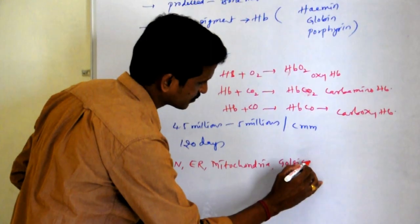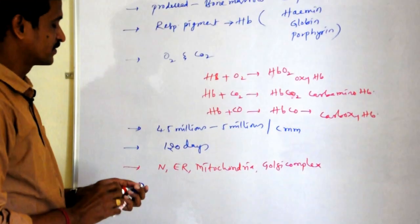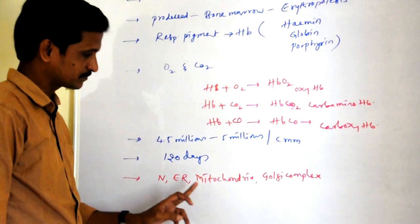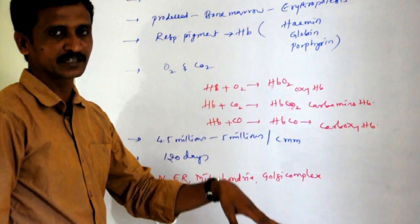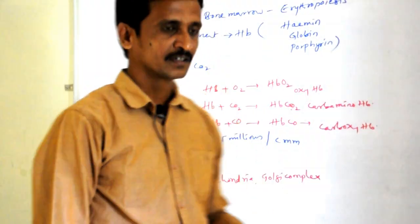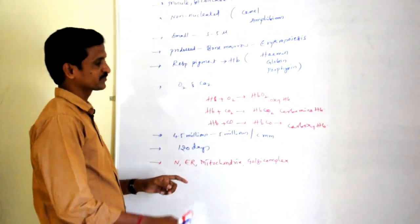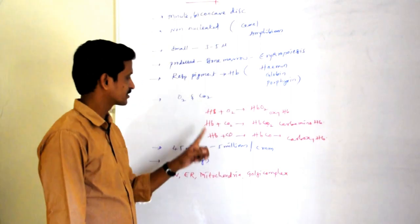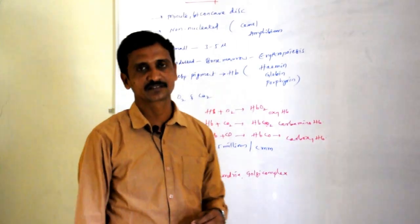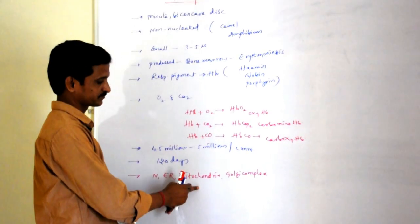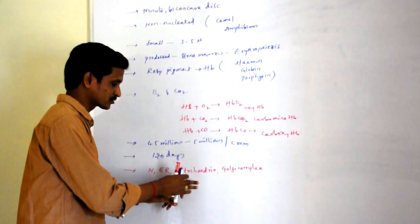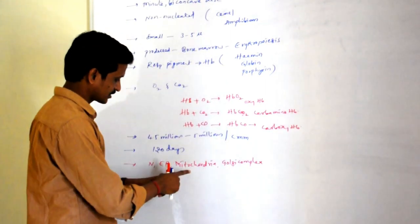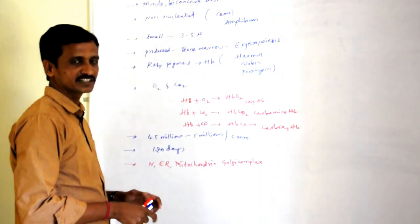When RBC is produced, before it becomes functional it possesses all cell organelles. When it turns functional, certain organelles disappear: nucleus, endoplasmic reticulum, mitochondria, and Golgi complex. When the nucleus is lost, the surface area increases for better transport. When mitochondria disappear, RBC becomes more efficient because otherwise the oxygen combined with RBC would be used by itself.